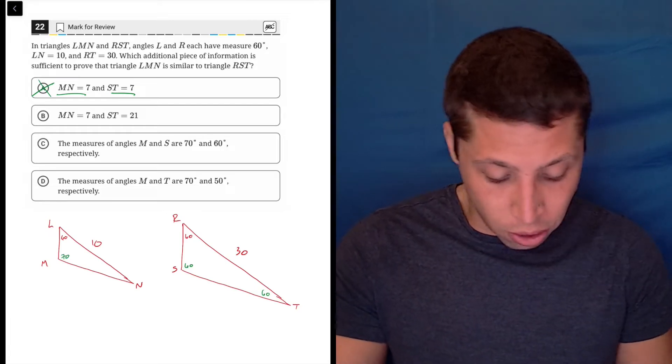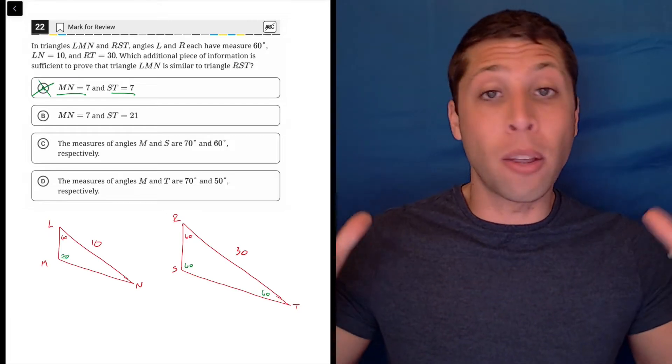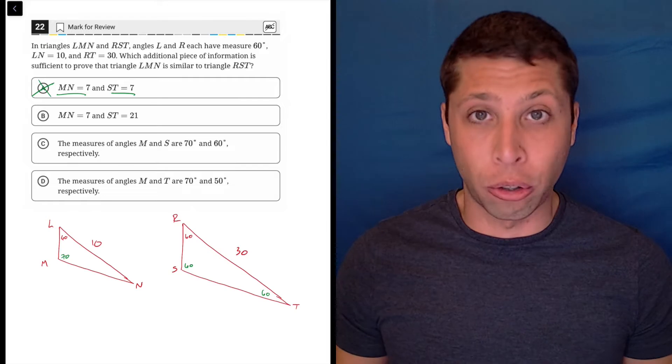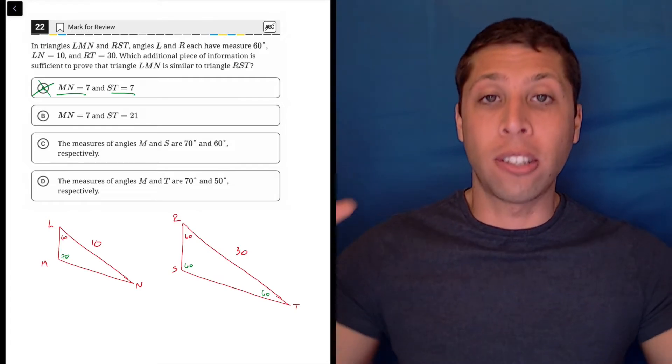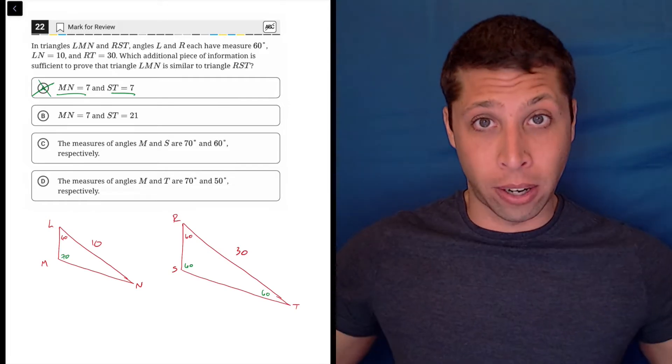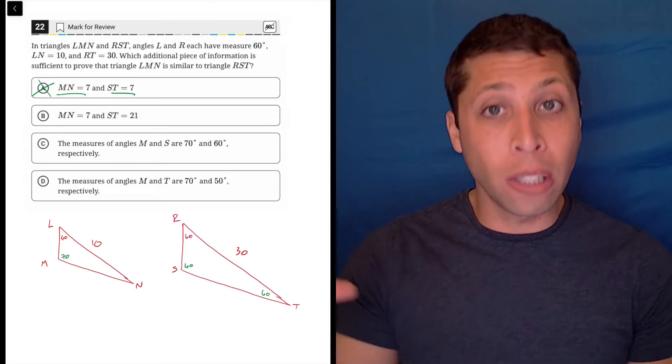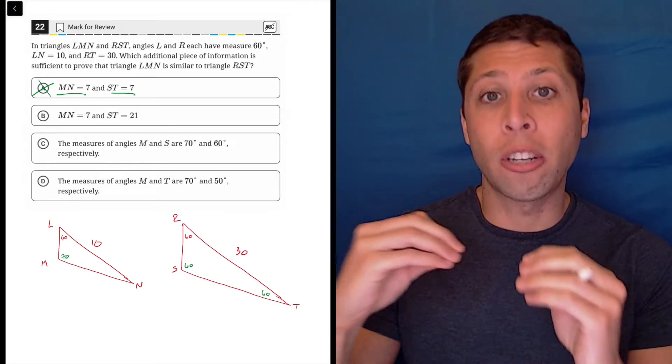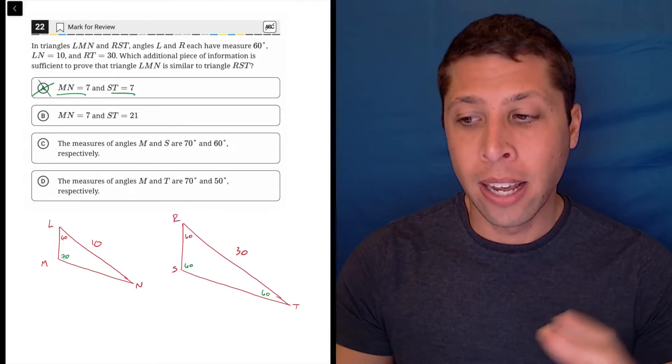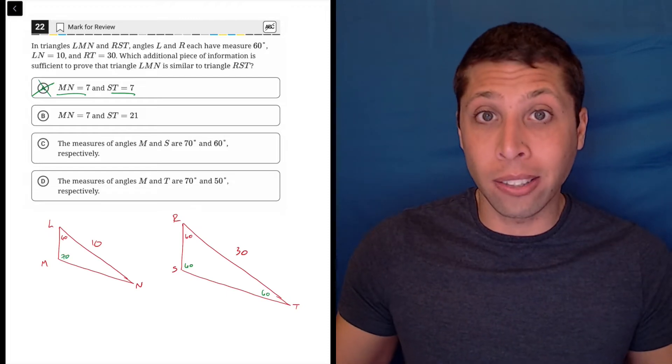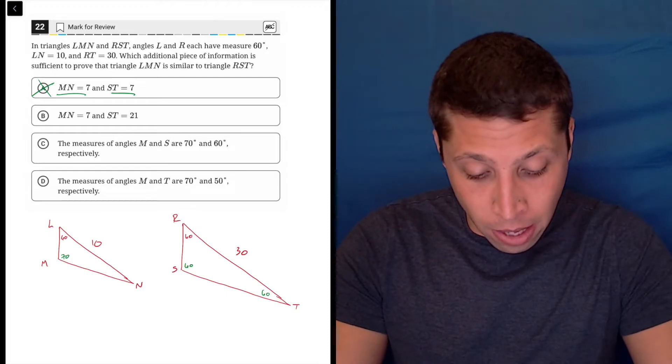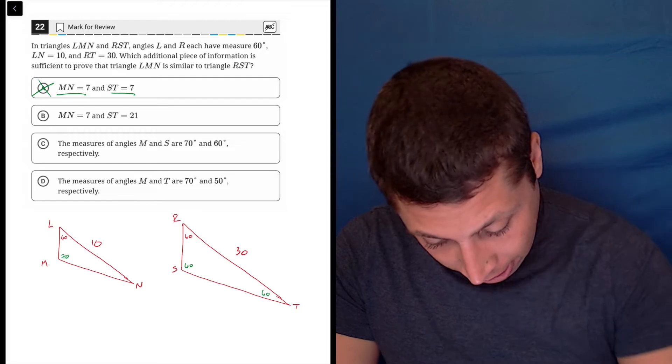So the angles don't match up, and that is to me the most important thing to know about similar triangles. The angles are the same. The sizes are different, right? They are in proportion. They grow and shrink, but the overall relationship of the angles is consistent, so if we had different angles, they're not similar. So that's going to get rid of choice C.